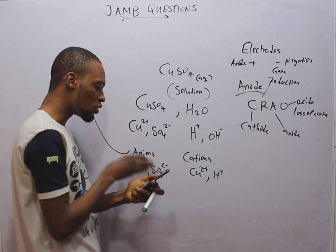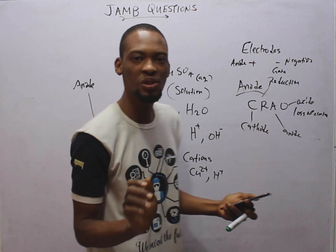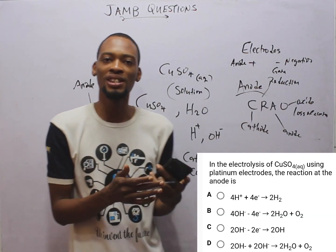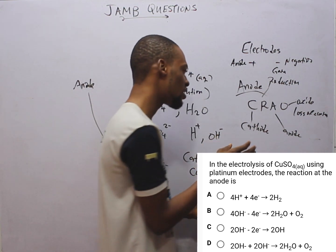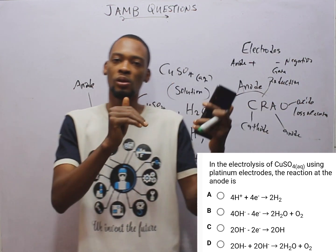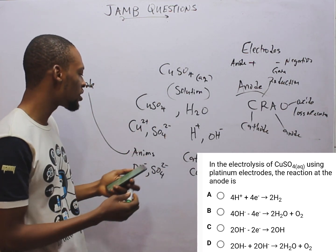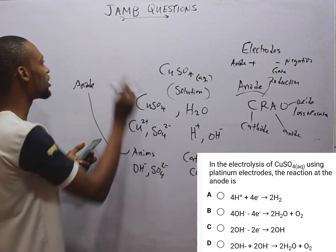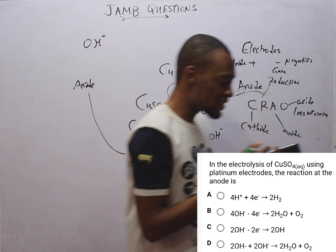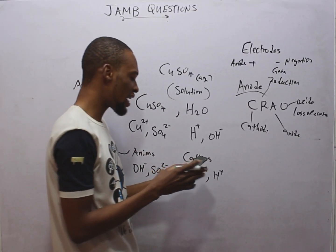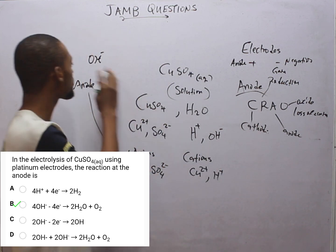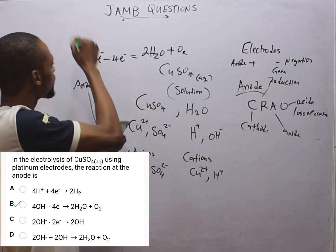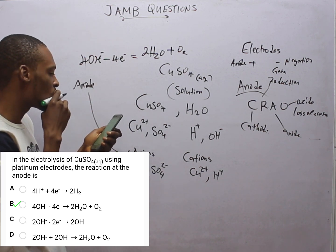Now that these two anions have migrated to the anode, remember that platinum electrodes are inert, so they don't take part in the reaction. In electrolysis, the nature of electrode, position in the electrochemical series, and ion concentration can all affect the discharge. In this case we follow the electrochemical series position. At the anode, OH⁻ is preferentially discharged over SO₄²⁻. Since the reaction at the anode is oxidation — loss of electrons — OH⁻ loses electrons to give water and oxygen is given off. The balanced equation is: 4OH⁻ → 4e⁻ + 2H₂O + O₂.